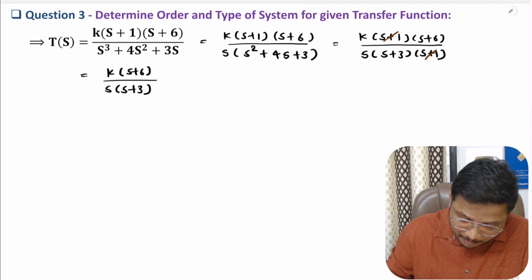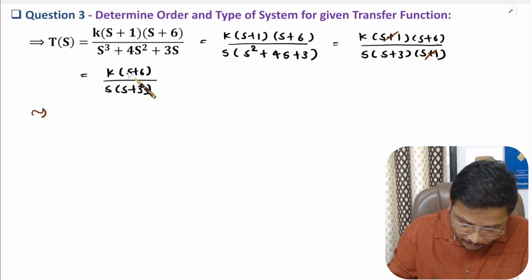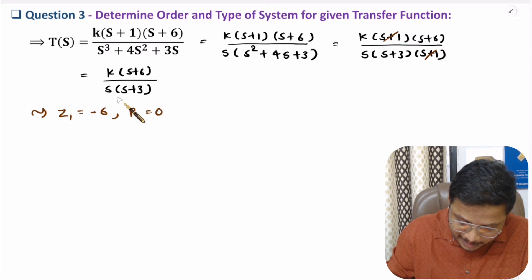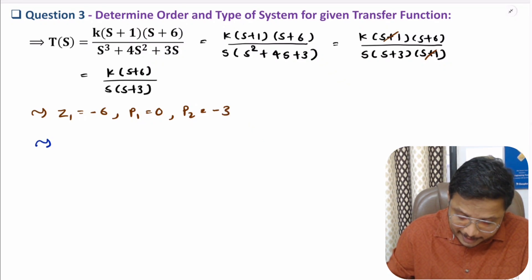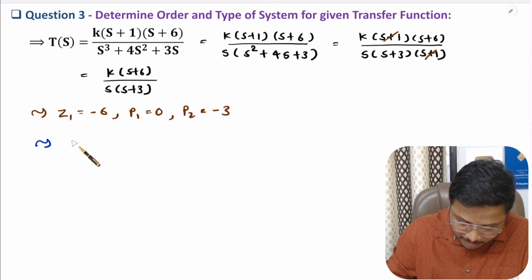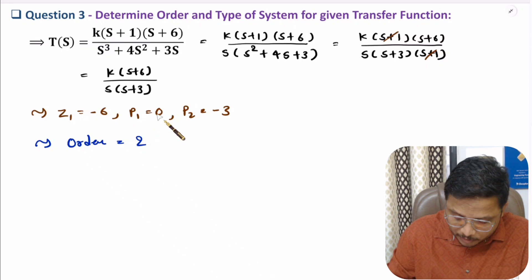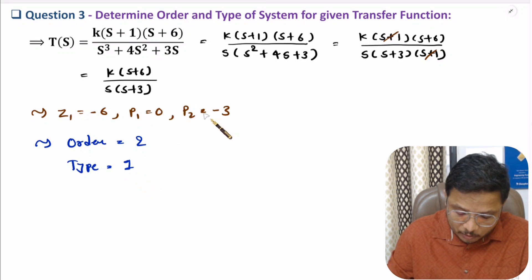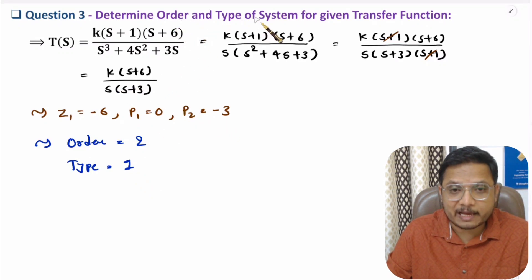From the simplified transfer function k(s + 6) / [s(s + 3)], there is one zero at s = −6, one pole at the origin, and one pole at s = −3 — two poles in total. So the order of the system is 2, and since one pole is at the origin, the type is 1.